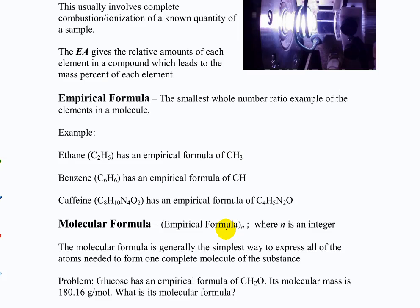The empirical formula is the smallest whole number ratio. For example, ethane is C2H6, but the empirical formula is CH3, because you can divide 2 and 6 by 2. The empirical formula always has the smallest numbers that maintain the appropriate ratio. The molecular formula is some integer multiple of the empirical formula — that's the actual number of atoms in the molecule. Ethane is really two carbons and six hydrogens; CH3 is just the ratio. Normally we care about the molecular formula, but empirical formulas are important in calculations because we can only get the ratio from mass percent data.